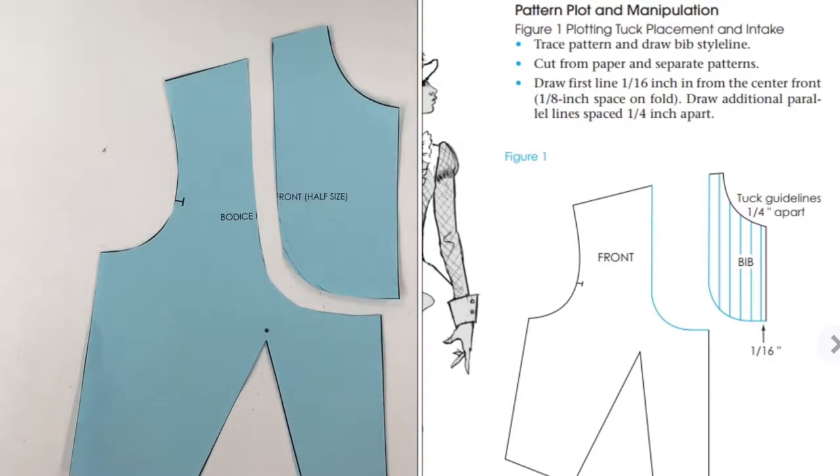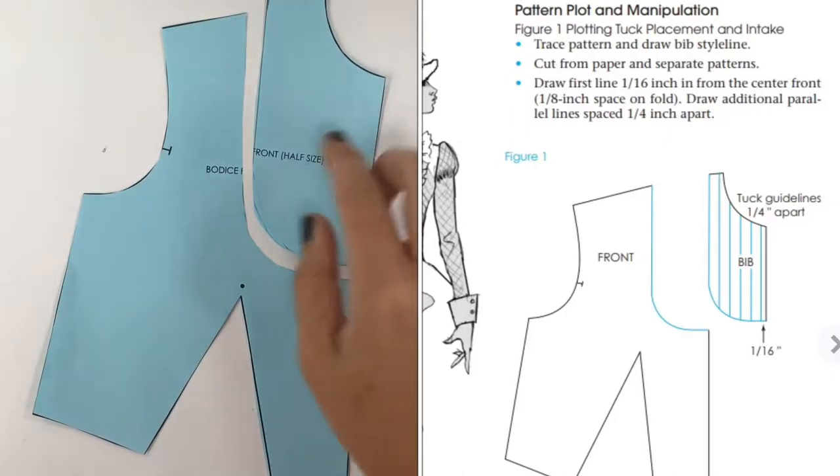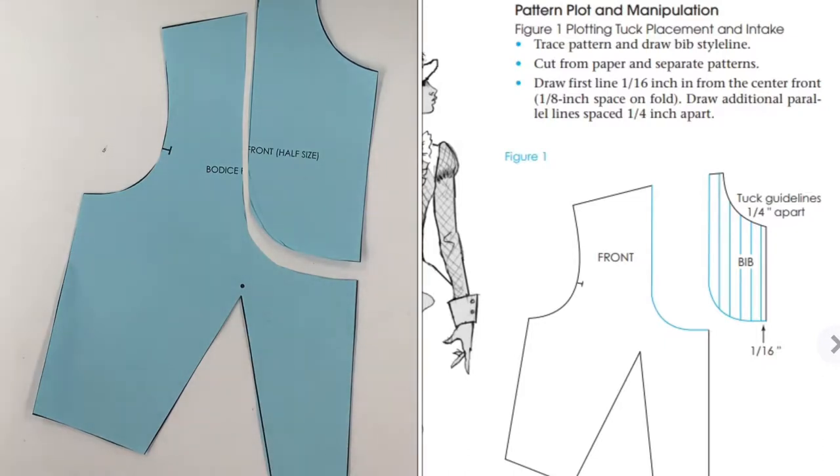The final step of figure one wants us to draw lines that really signify where our pin tucks will be after they're sewn up. It's important to note that this garment will be cut on the fold, so it'll be a mirror image. It says draw our first line a sixteenth inch in from our center front, which would equal a one eighth inch space on the fold. So the first pin tucks in the center is going to be an eighth inch apart. Then it says draw additional ones a quarter inch apart. I don't know why they want the center front one closer together than all the other ones. That's a little odd to me and it doesn't really match their illustration either. In their illustration, they all look evenly apart.